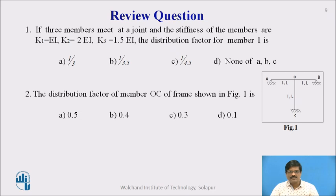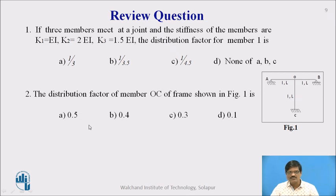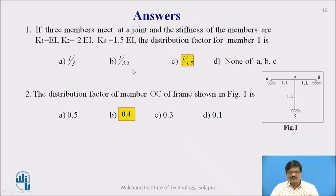Before we proceed, let us go for these review questions. The first question is: if three members are meeting at a joint and the stiffness of the members are K1 = EI, K2 = 2EI, K3 = 1.5EI, the distribution factor for member 1 is — four options are given. The second question is about the distribution factor of member OC of the frame as shown in the figure. The correct answers are C for the first question and 0.4 for the second question.